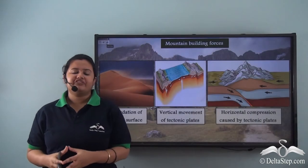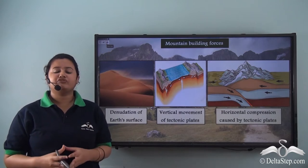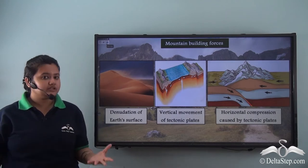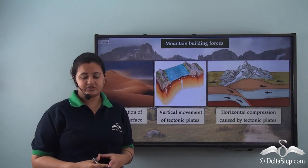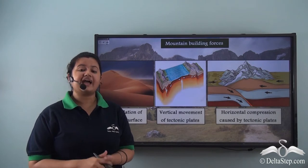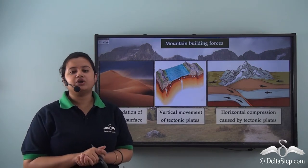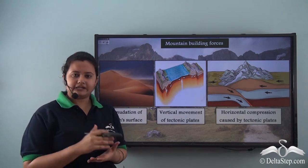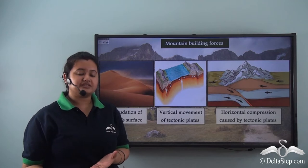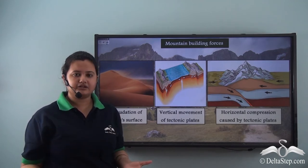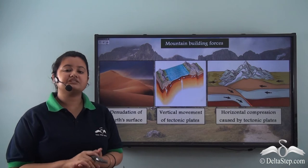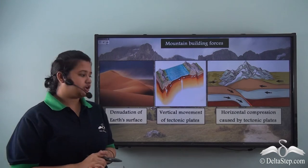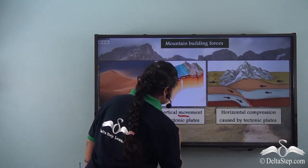In our previous lesson we studied that landforms are formed by natural forces. Natural forces that act on the earth's surface are called exogenic forces, while forces that act beneath the earth's surface are called endogenic forces. Landforms like mountains are formed both by internal processes acting beneath the earth's surface and external forces acting above it.